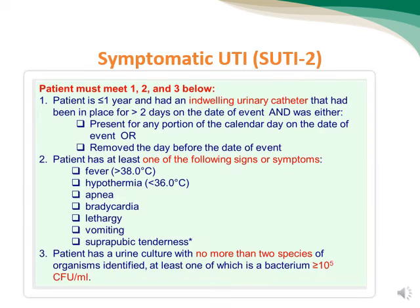SUTI Type 2, or symptomatic urinary tract infection type 2, is the same as type 1 with some minor differences. The age here is one year of age or less. There are additional signs and symptoms because of the age, typically observed in infants, such as hypothermia, apnea, bradycardia, and vomiting. All other signs and symptoms are the same as type 1.